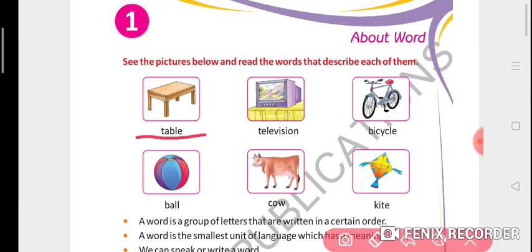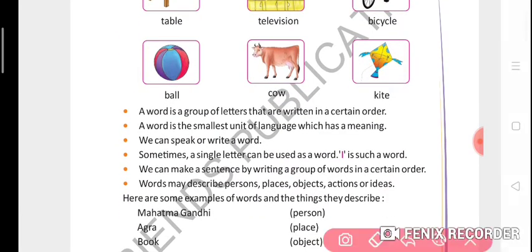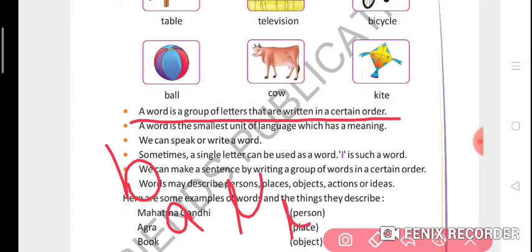Table, television, bicycle, ball, cow, and kite. A word is a group of letters that are written in a certain order. A word is a group of letters - B, A, double L. If we write it individually, we can't get any word. If we write in a group, we get a word: ball.